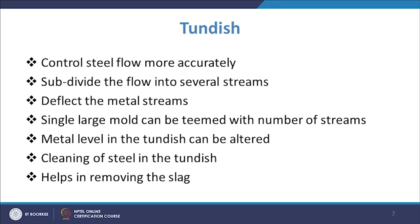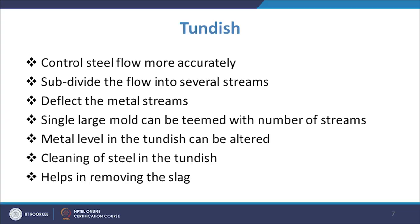Because the tundish has a very large surface area, during changeover there is very little decrease in the height of the free surface of liquid metal, so the change in velocity is very small and steel flow is controlled more accurately. The tundish also subdivides the flow into several streams — when liquid metal enters and strikes the tundish bottom, it moves toward different outlets.